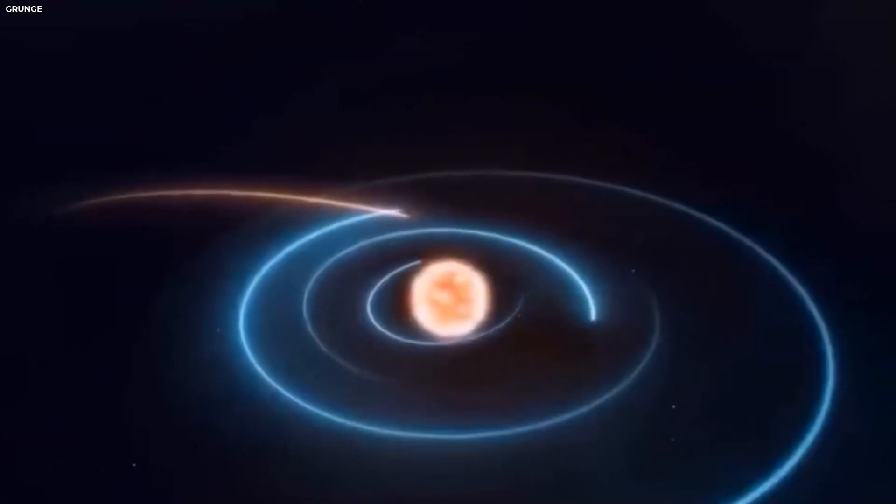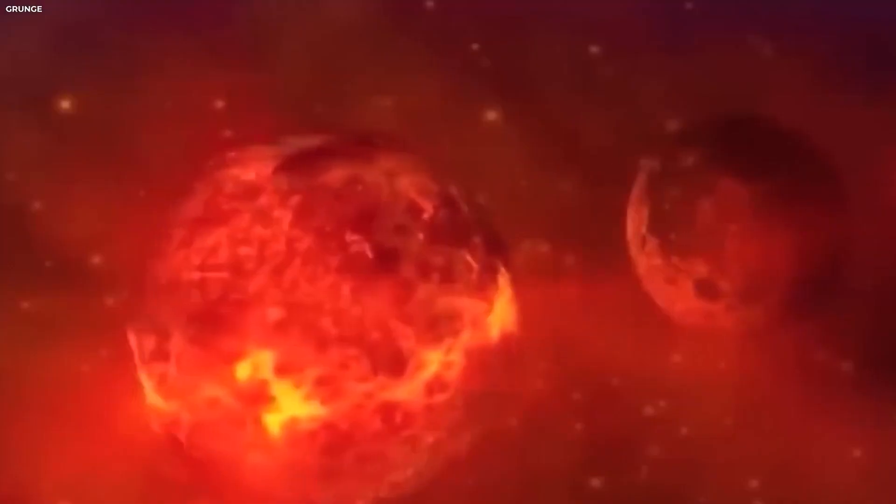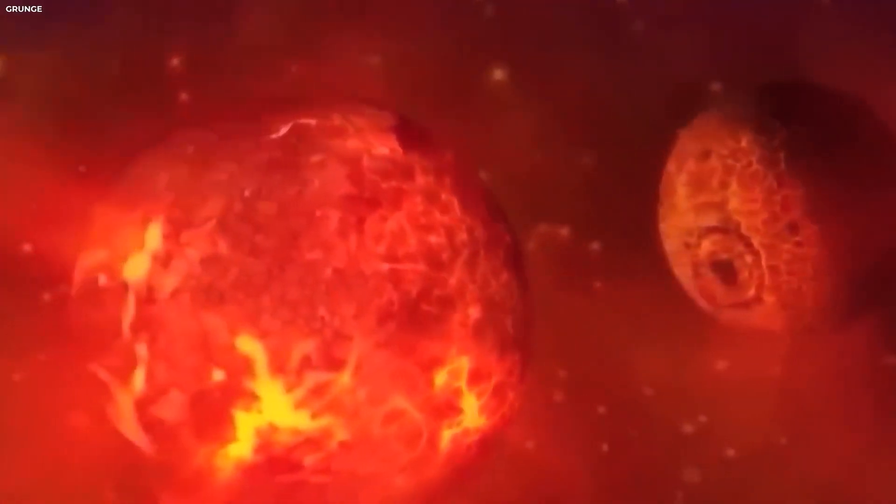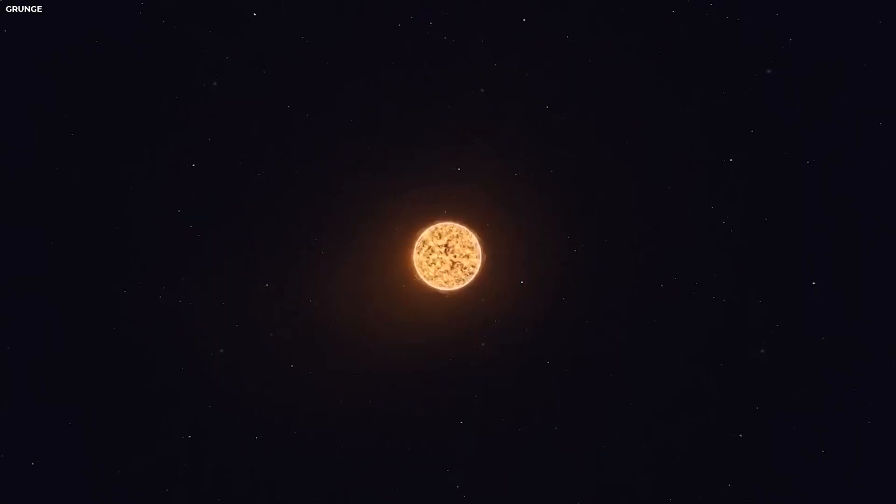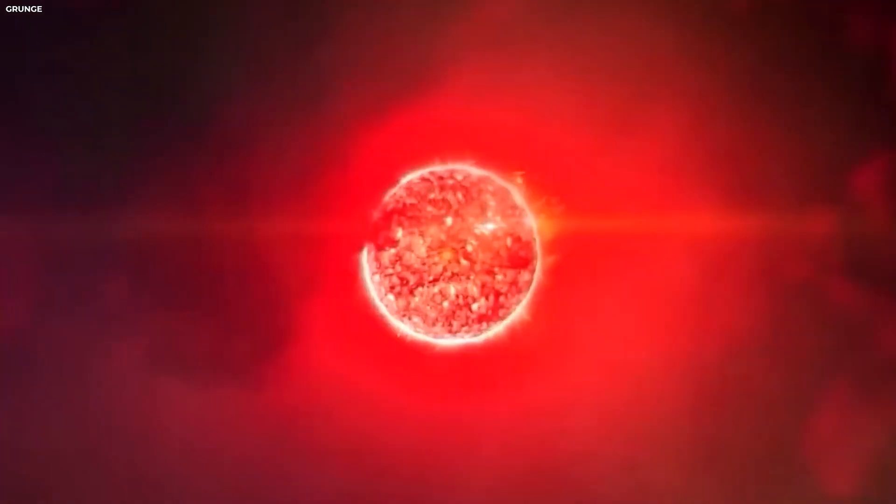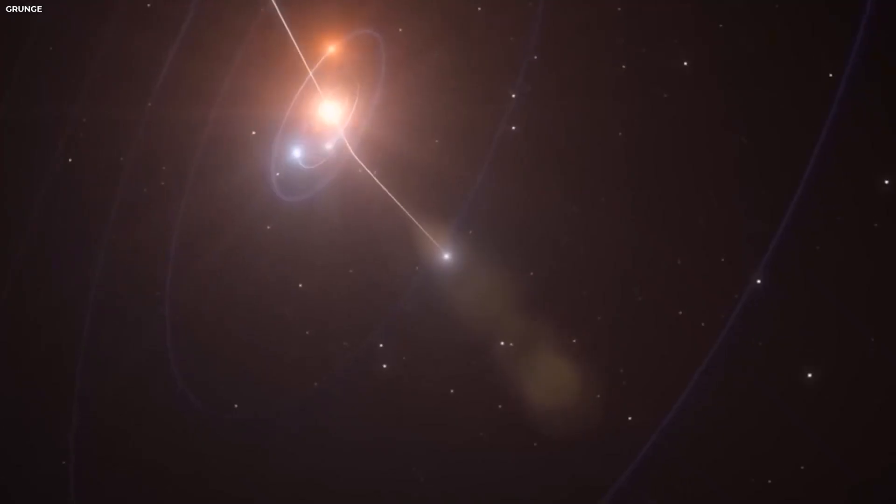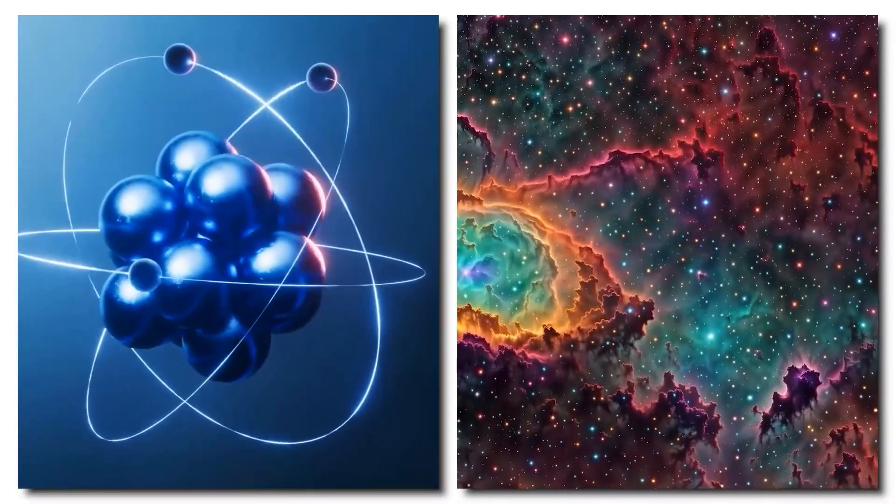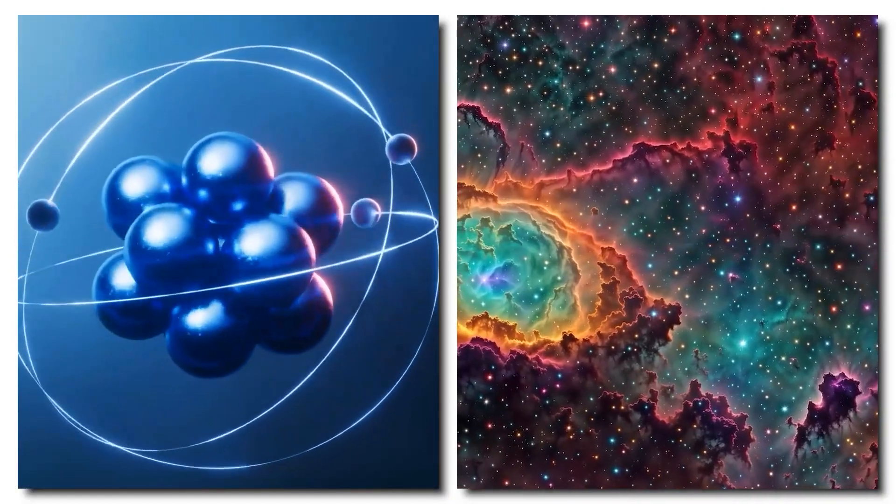So what's going on inside this red supergiant? That's the million-dollar question. At the heart of this mystery is fusion. In stars like Betelgeuse, nuclear fusion is what keeps everything balanced. Gravity pulls inward, fusion pushes outward. But as supergiants near the end of their lives, this delicate balance starts to get wobbly.